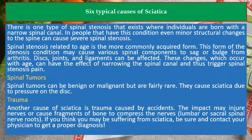In people born with a narrow spinal canal, even minor structural changes to the spine can cause severe spinal stenosis. The more commonly acquired form is age-related spinal stenosis, which may cause various spinal components to sag or bulge from arthritis. Discs, joints, and ligaments can be affected. These changes, which occur with age, can narrow the spinal canal and thus trigger spinal stenosis pain.